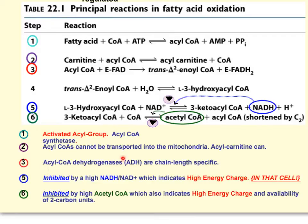Then the enzyme acyl-CoA dehydrogenase acts on the acyl-CoA. There are many of these enzymes and they are chain-length specific — for 18-carbon, 16-carbon, or 14-carbon acyl-CoAs. It creates an FADH2 and a trans-enoyl-CoA. The trans-enoyl-CoA is then converted to hydroxyacyl-CoA, then to 3-ketoacyl-CoA, and finally to acetyl-CoA.